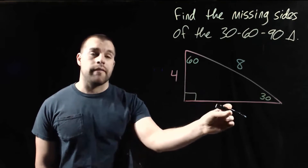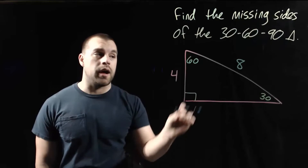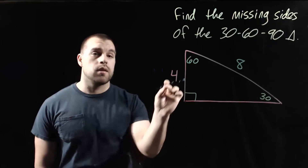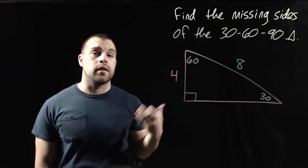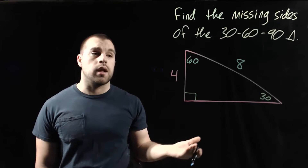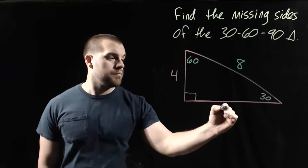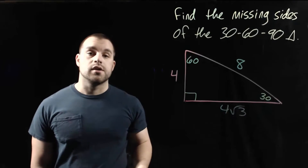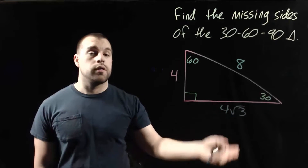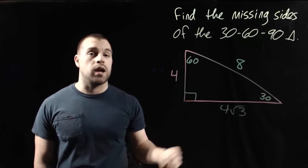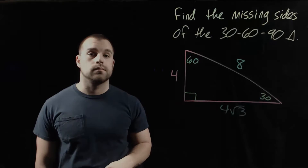If we have the short leg and we want to find the longer leg across from the 60-degree angle, we take the length of the short leg times the square root of 3. So we get 4 root 3 as that missing longer leg of our triangle.